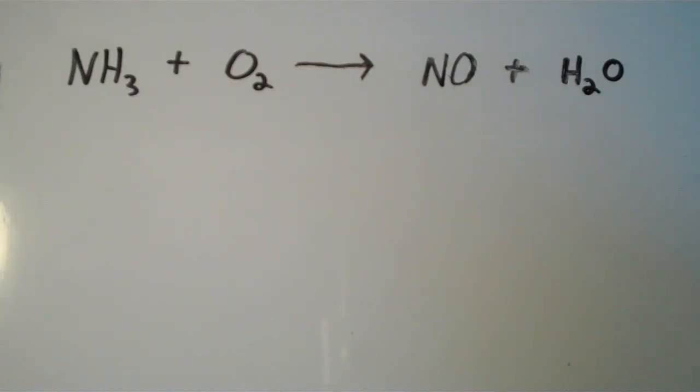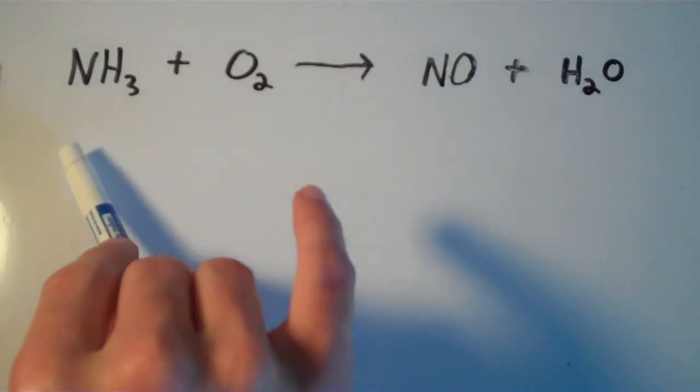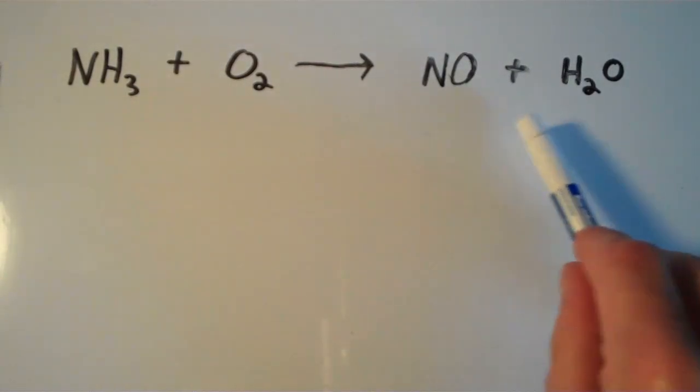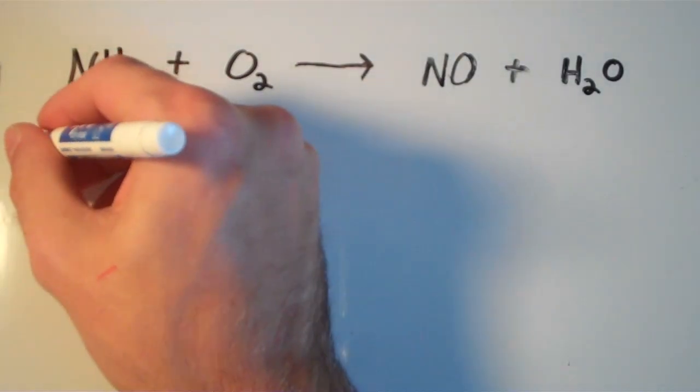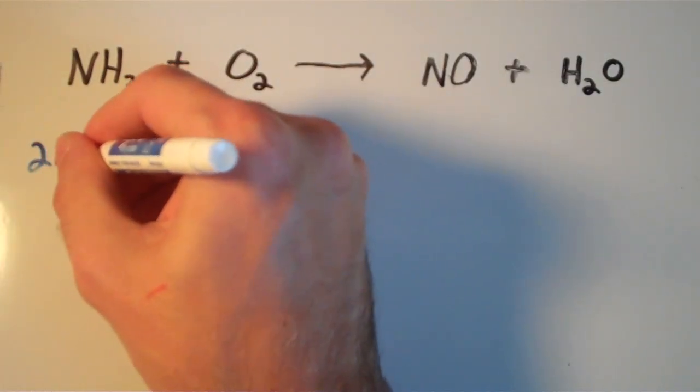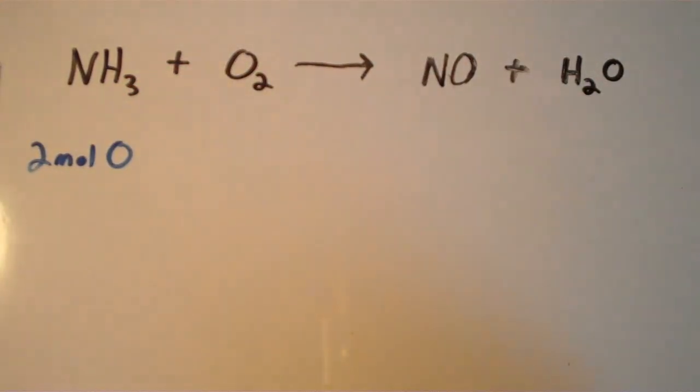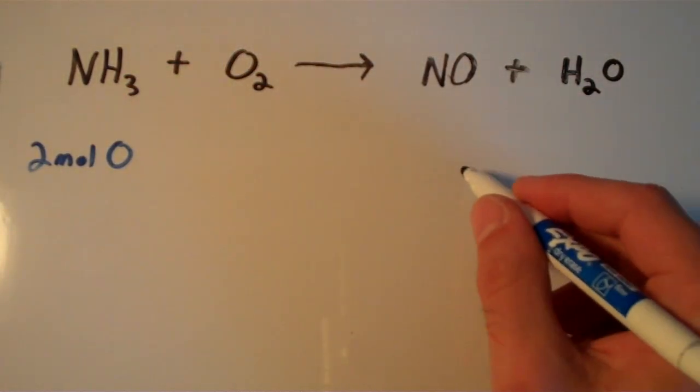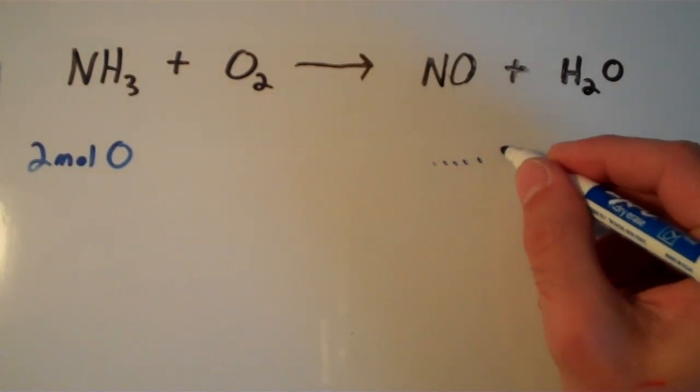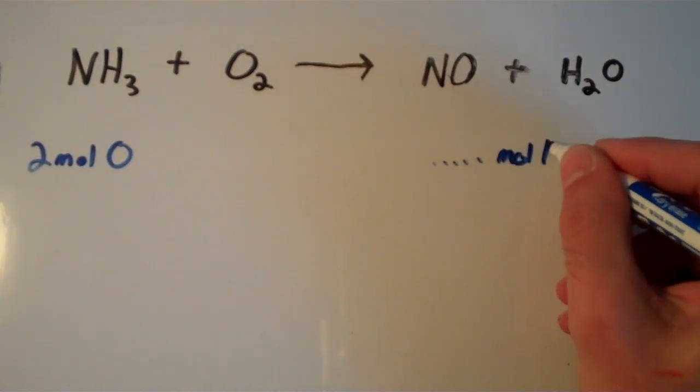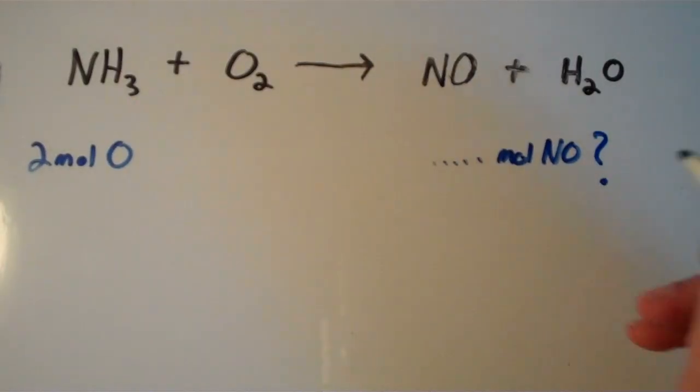Suppose we're given the following chemical equation: NH3 plus O2 yields NO plus H2O. Suppose we start out with 2 moles of oxygen and I want to know the amount of NO in moles. The moles of NO, that's what I want.